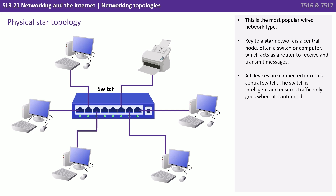Here we see a physical star topology. This is the most popular wired network type. The key to a star network is a central node — often a switch or a computer — which acts as a router to receive and transmit messages around the network. All devices are connected to the central switch, which is intelligent and ensures traffic only goes where it's needed.